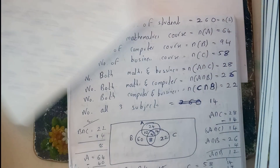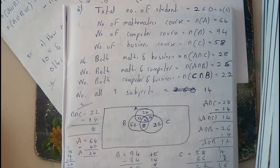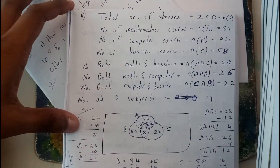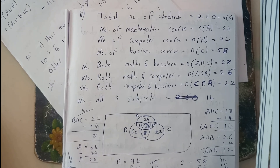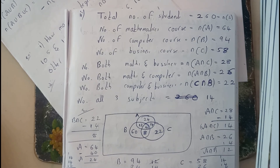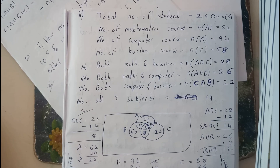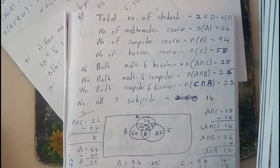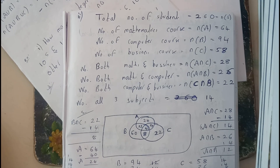Let's go through a problem. I've written it in a shorter way for clarity. Total number of students is 260. A is Maths, B is Computers, C is Business. N(A) = 64, N(B) = 94, N(C) = 58. In both Maths and Business: 28. In both Maths and Computers: 26. In both Computers and Business: 22. Students interested in all three subjects: 14.